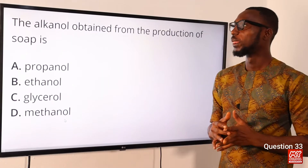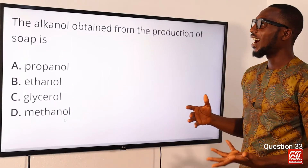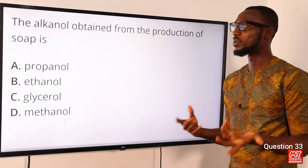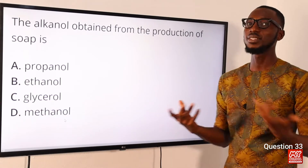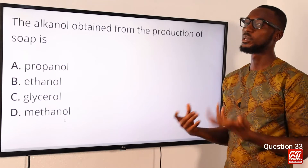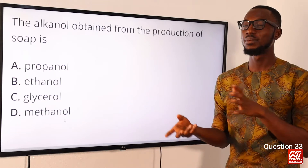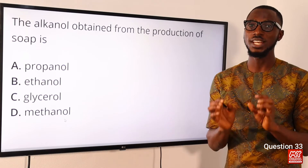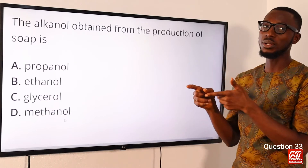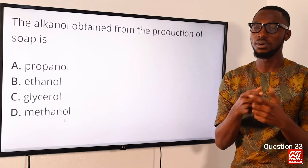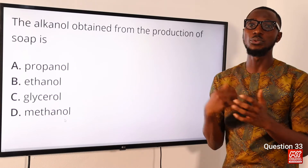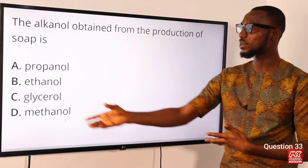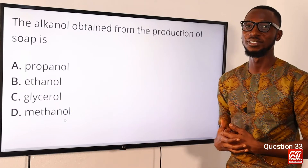Question 33: The byproduct obtained from the production of soap is what? In soap production, fat and oil plus caustic alkali gives soap plus glycerol. The IUPAC name for glycerol is propane-1,2,3-triol. The correct option is option C for glycerol.